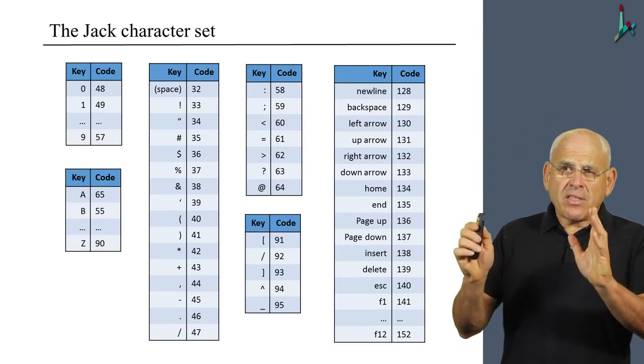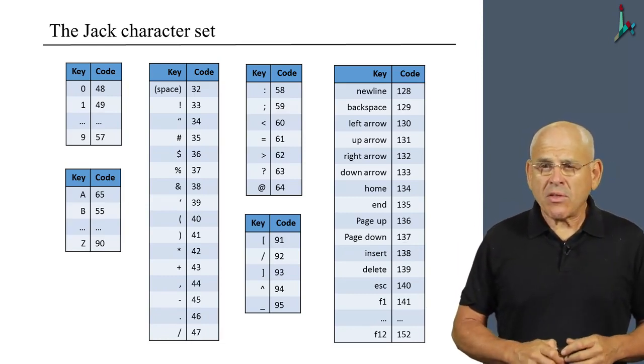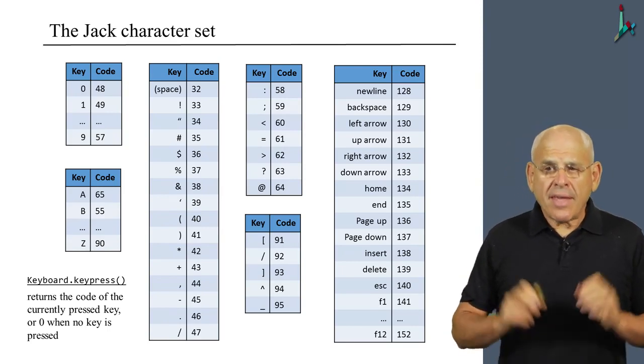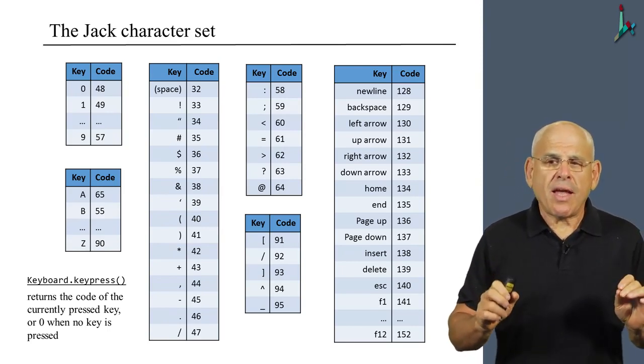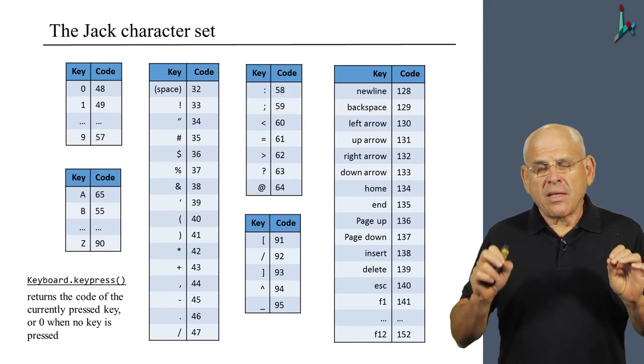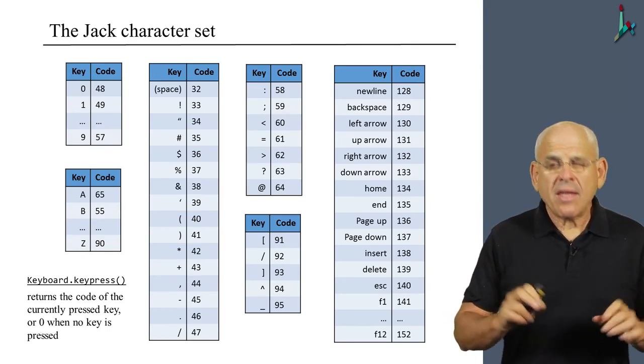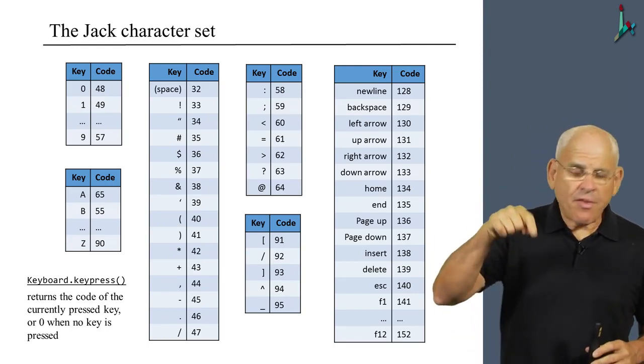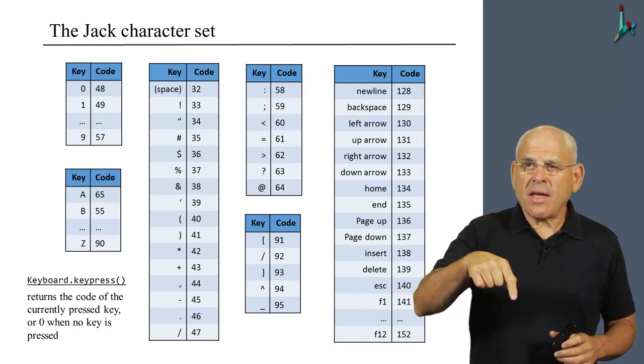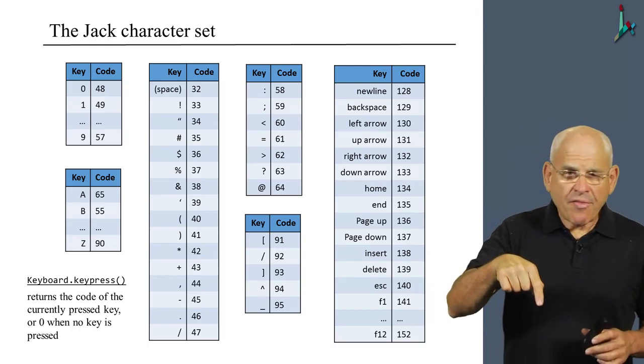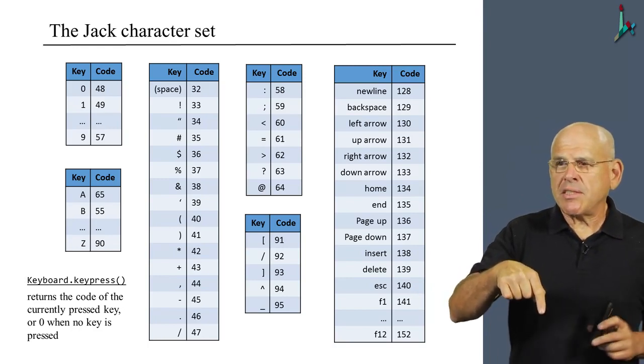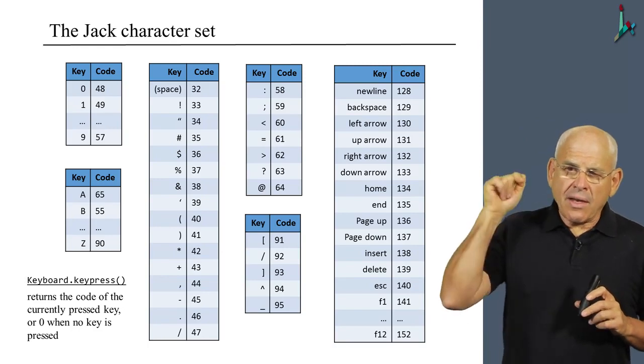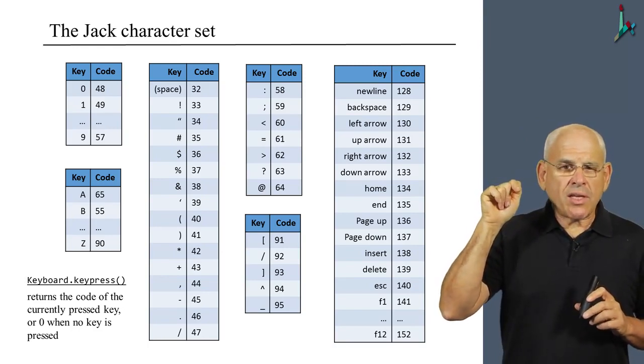And given this context of character set, I want to say a few words about the keyPressed method. The keyPressed method always returns the scan code of the key that the user is currently pressing. So as long as my finger is down on a certain key, let's say on a left arrow, keyPressed is going to return the number 130.